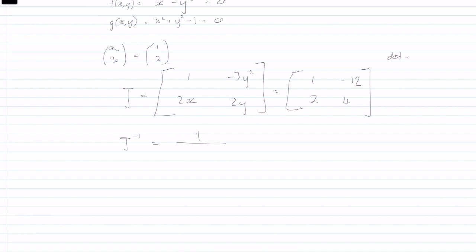and the determinant is equal to, this matrix is equal to one times four minus minus 12 times two, which is equal to 28. So we have one over 28. Then what you do is you switch the diagonals, the main diagonal. So switching the main diagonal, we're left with four and one,